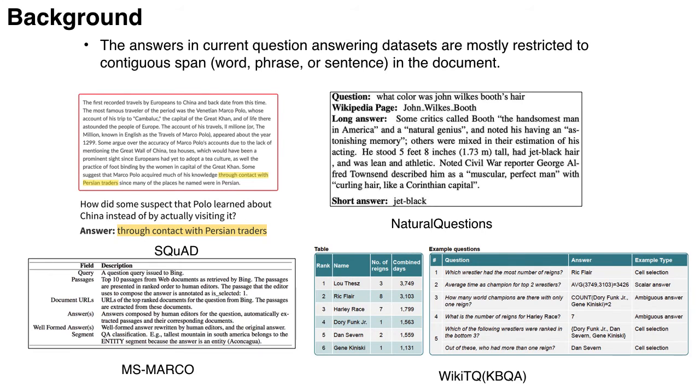Currently, most machine reading comprehension and QA datasets are based on continuous span answers, such as words, phrases, or sentences. For example, the answers in the prevalent SQuAD dataset are continuous phrases from a Wikipedia passage.